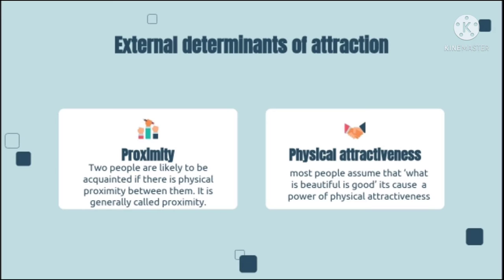Students sitting on adjoining chairs are more likely to become friends. According to Zajonc (1968), repeated exposure to a new stimulus results in an increasingly positive evaluation of that stimulus. Research by Moreland and Beach (1992) has shown that the more times a particular assistant attended class, the more she was liked. With repeated exposure there is a decrease in negative emotions while positive emotions increase. However, it has been seen that the repeated exposure effect does not work when a person's initial reaction to the stimulus is negative.